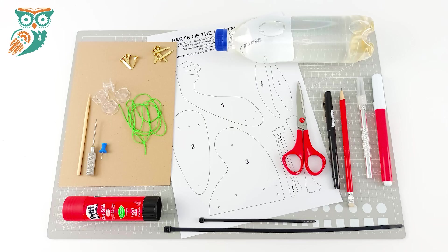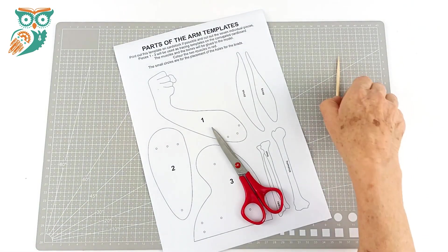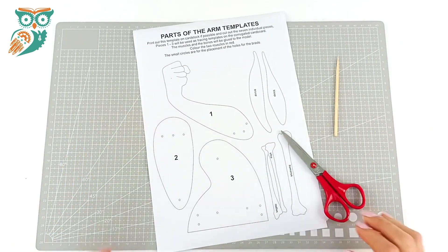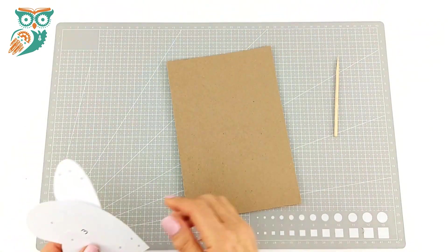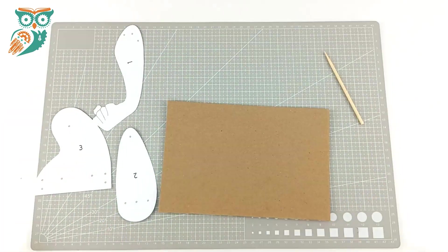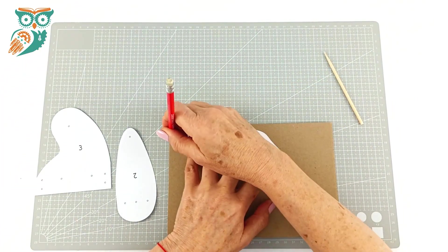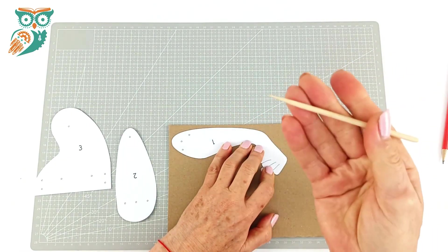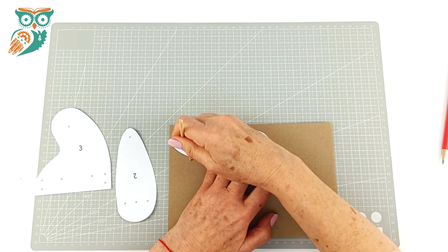We're going to gather up our supplies here and you can get these templates from the website and I'll have a link in the description. We printed it off on a thicker kind of cardstock type of paper. We're going to take the parts labeled 1, 2 and 3 and trace them onto a piece of cardboard. This is just a piece of cardboard from the side of a cereal box.